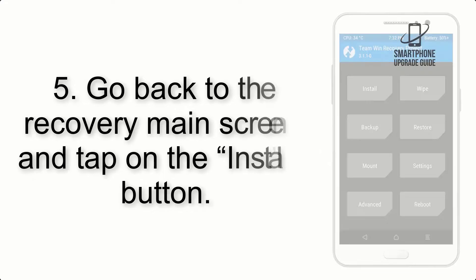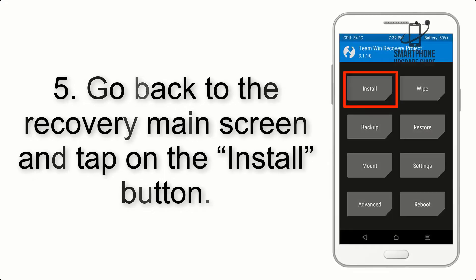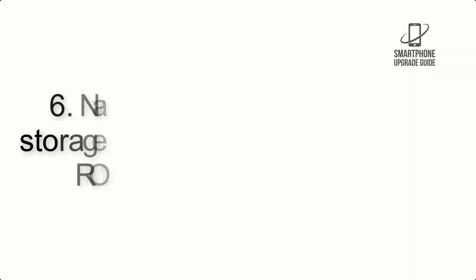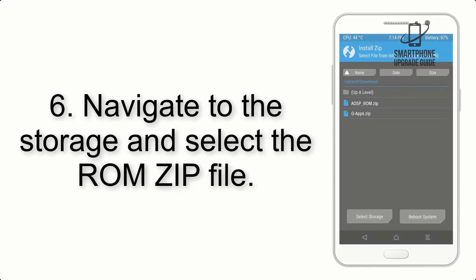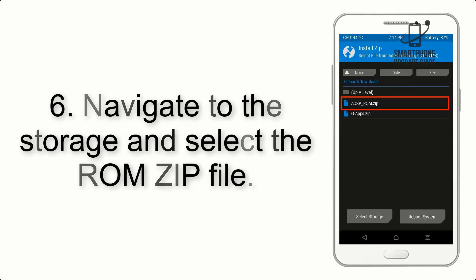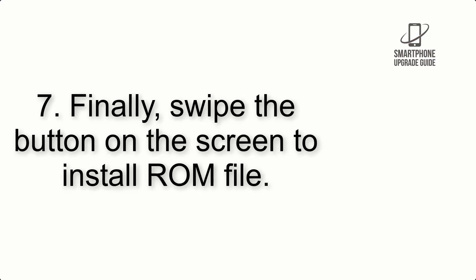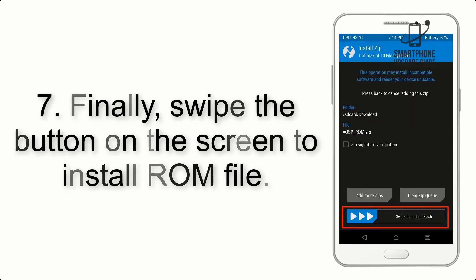Step 4: Swipe the button to wipe the device. Step 5: Go back to the recovery main screen and tap on the Install button. Step 6: Navigate to the storage and select the ROM zip file.